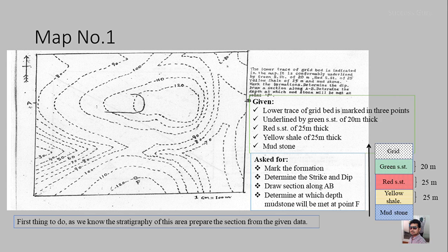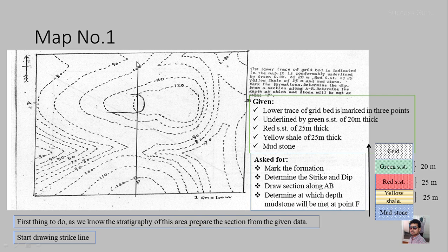We will now start drawing the strike lines. As you know, a line joining equal elevation points is a strike line. You can see here there is a point of outcrop at 120 meters and another point at the same height, so we simply draw a line connecting these two points. A single point allows many lines, but two points define one line. We draw this line and it will be the strike line for the grey-green sandstone bed. The strike value is 120 meters, matching the contour elevation.